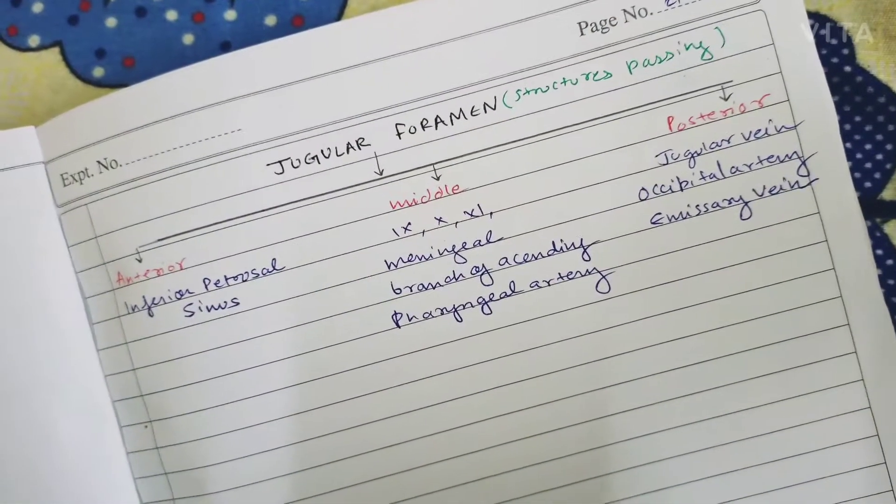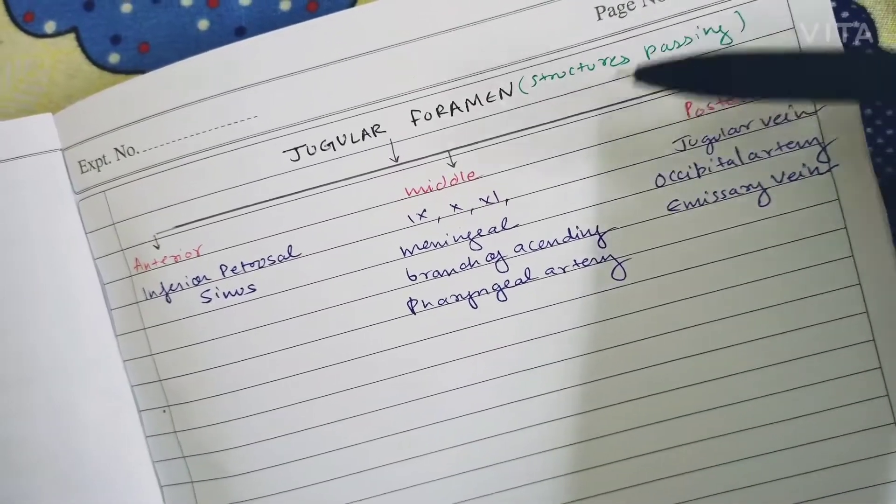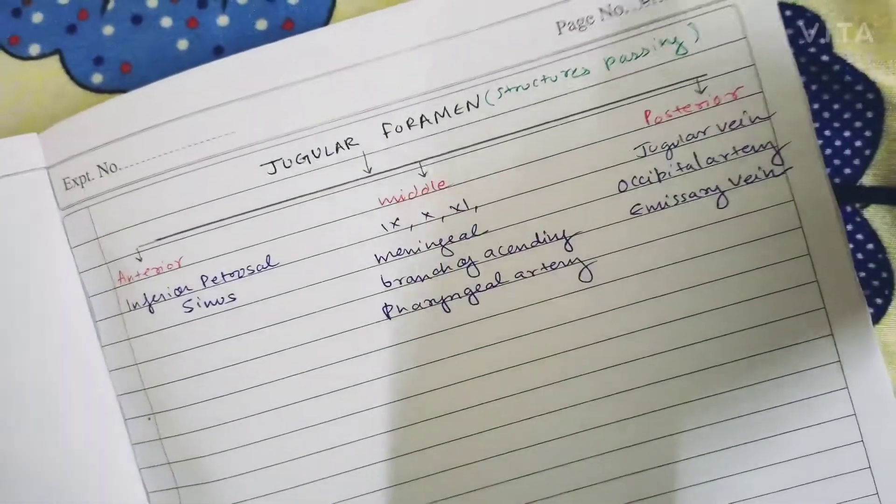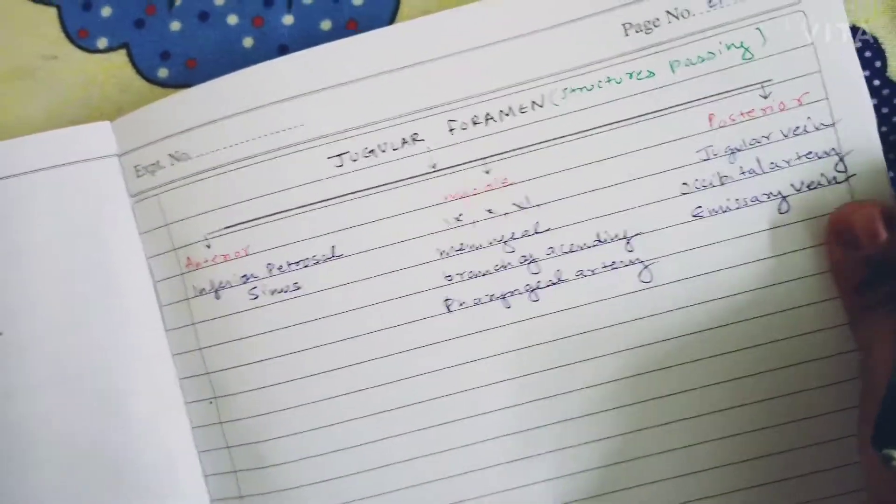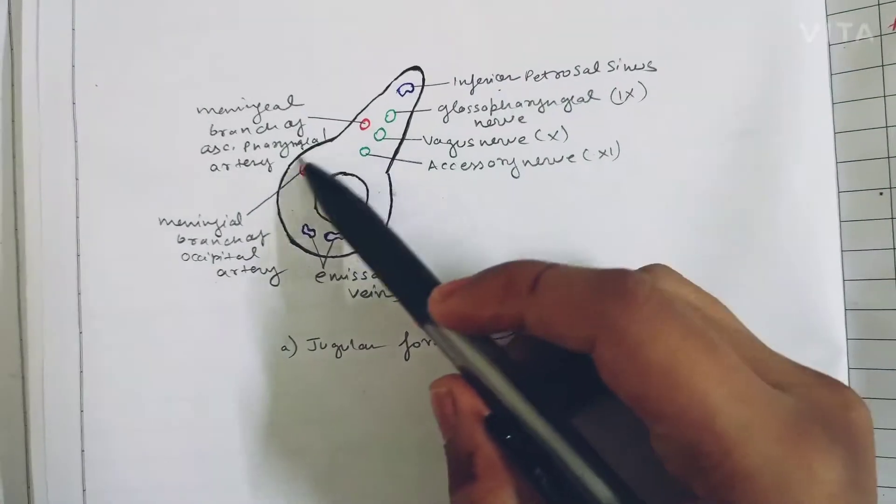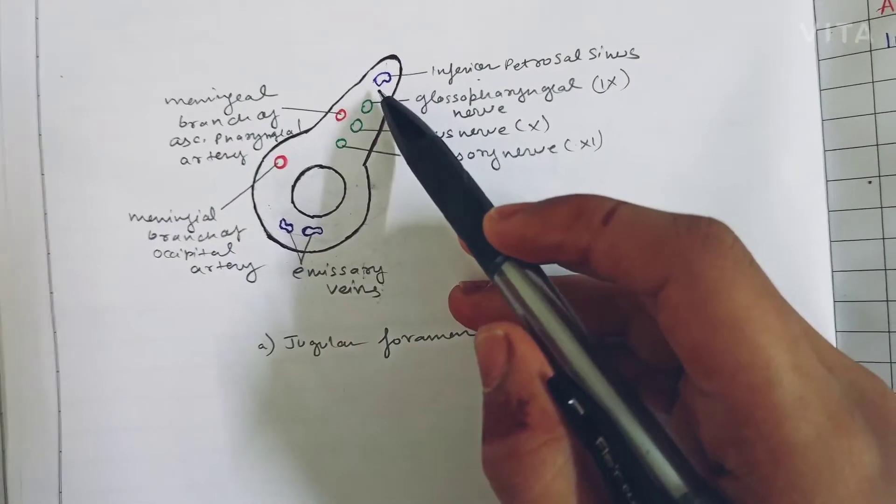Hello everyone, today we will be studying about the structures passing through the jugular foramen with a simple trick. Let's see how the jugular foramen looks like - it looks something like this, and these are the structures passing through it.